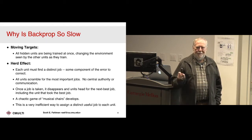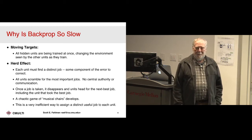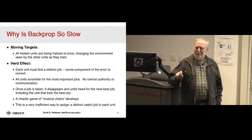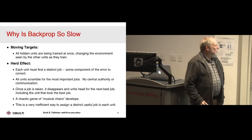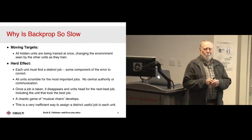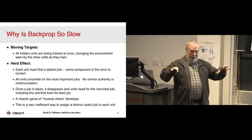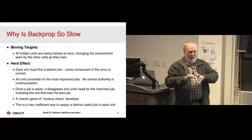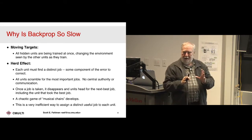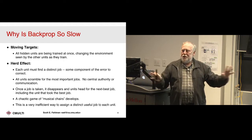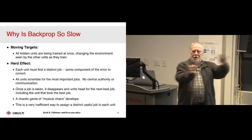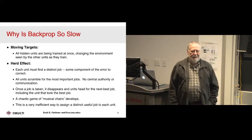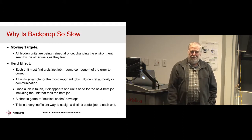Instead of diving right into the math, I was trying to visualize the problem as seen by one of the units in the network. The first thing is that all the targets are moving — they're all being trained at once. I see some error coming back and I'm trying to adjust my weight to neutralize that error, but other units are changing things too. The error I'm seeing is always changing. Because all units are being updated at once, they're all interacting, affecting one another — it's very inefficient.